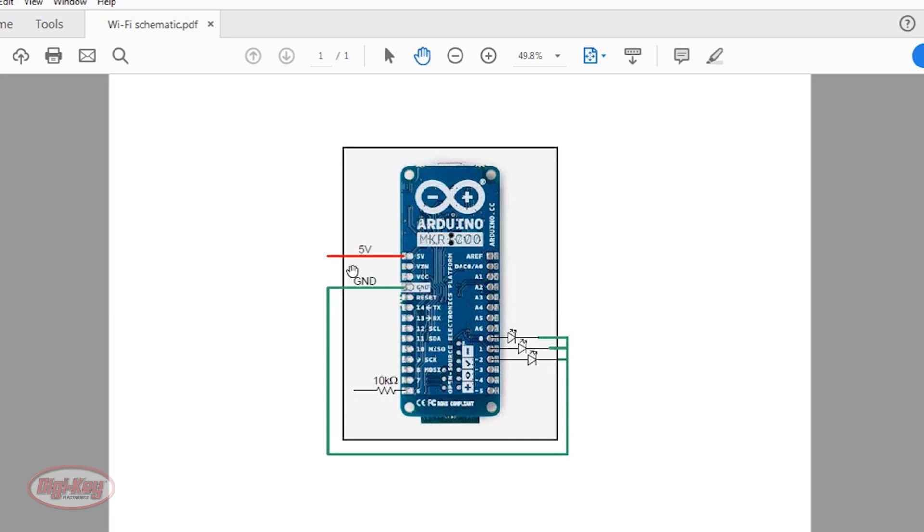So here is kind of a schematic of the Arduino board with the connections. I have five volts here, and that corresponds to the red wire on the breadboard. I have ground. The three LEDs connected to digital I/O zero, pin one, and pin two. And then the 10K ohm resistor connected to digital I/O pin six.